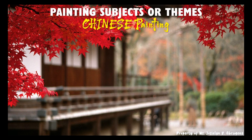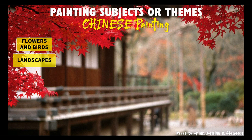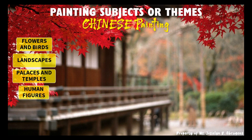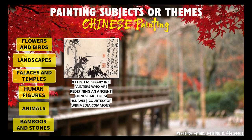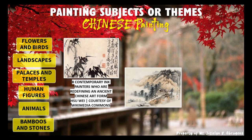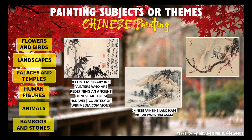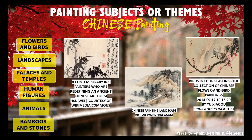Chinese painting subjects or themes include: flowers and birds, landscapes, palaces and temples, human figures, animals, and bamboos and stones. The first example is the eight contemporary ink painters who are redefining an ancient Chinese art form, by Shu Wei. The second is the Chinese painting landscape art. The third example is the birds in four seasons, a collection of Chinese flower and bird paintings by Yu Xiaoyu.